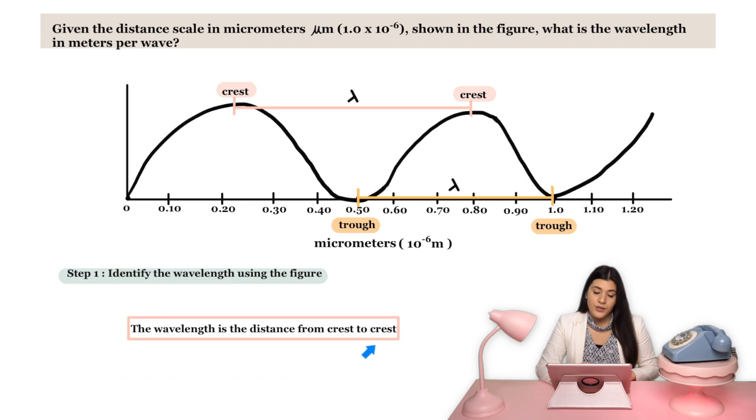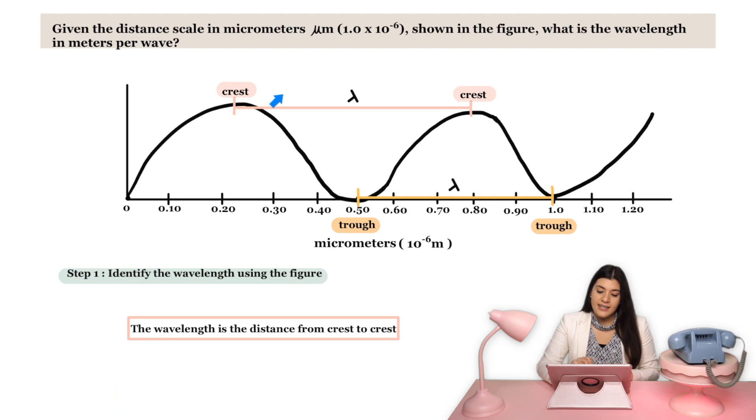We can look at the distance from crest to crest. And looking at the crest, it's really just the highest point on that wave or on that curve. So it's from this highest point, the crest, to the other highest point, the other crest. And that distance would give us the overall wavelength.